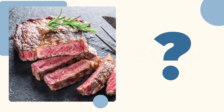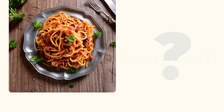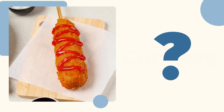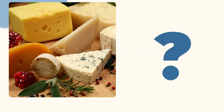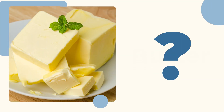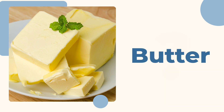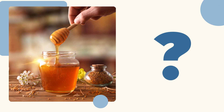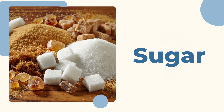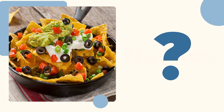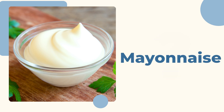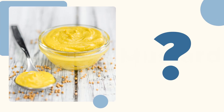Do you know what this is? This is a corn dog. Do you know what this is? This is cheese. Do you know what this is? This is butter. Do you know what this is? This is honey. Do you know what this is? This is sugar. Do you know what these are? These are nachos. Do you know what this is? This is mayonnaise. Do you know what this is? This is mustard.